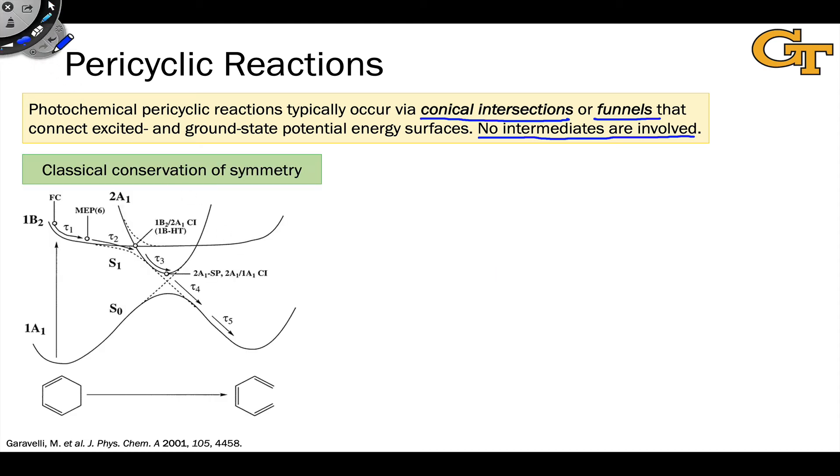To remind us what a conical intersection looks like on a potential energy surface diagram, I want to start with this diagram from this paper by Garavelli, where he draws a classical potential energy surface diagram for the photochemical ERO process of cyclohexadiene. We can identify a conical intersection here where the 2A1 potential energy surface crosses the 1B2 potential energy surface. And we can identify here a funnel with a qualitatively different structure where there is an avoided crossing, the potential energy surfaces avoid crossing because of their identical symmetry, but there is still some probability of the representative point making a jump from the 2A1 to the 1A1 surface.